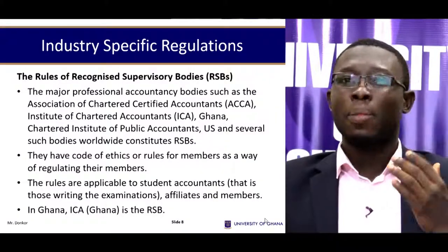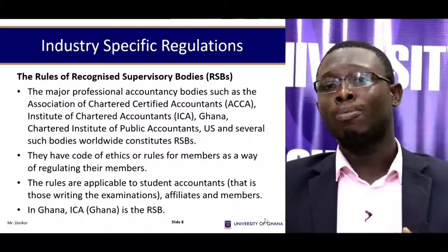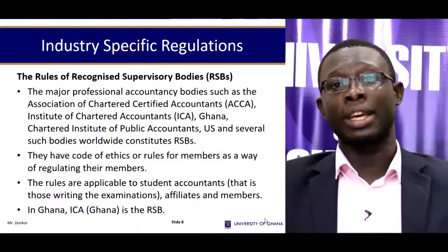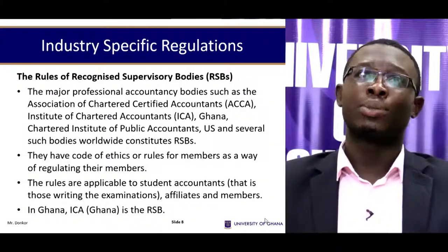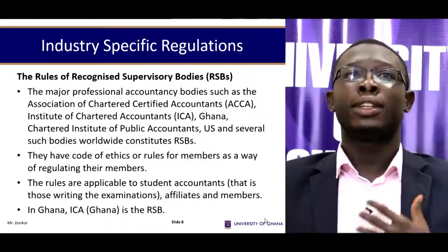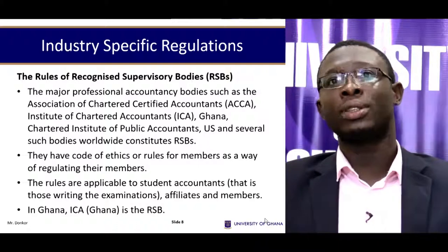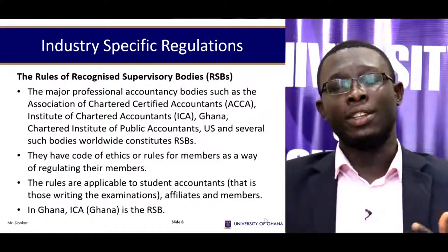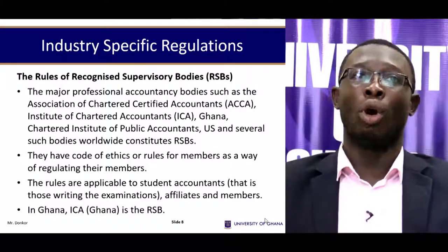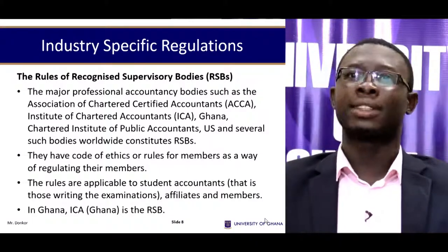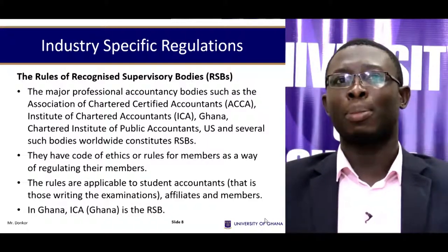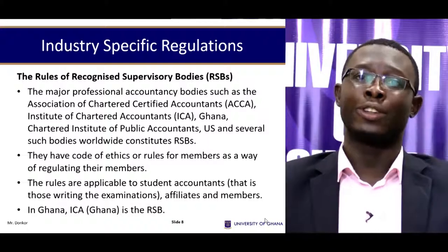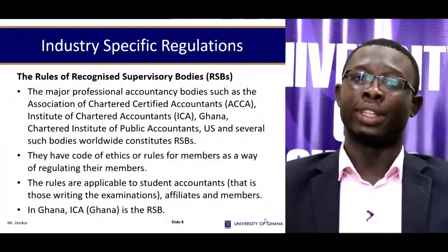Industry-specific regulations. Within the industry an entity finds itself, there are specific regulations that govern its operations, and this is also the case for auditing. The major professional accountancy bodies — such as the Association of Chartered Certified Accountants (ACCA), the Institute of Chartered Accountants Ghana, and the Chartered Institute of Public Accountants US, and several such bodies worldwide — constitute the recognised supervisory bodies that regulate the activities of auditing in their respective jurisdictions. They have codes of ethics or rules for members. In Ghana, the Institute of Chartered Accountants Ghana is the recognised supervisory body for professional accountants and auditing as a whole.